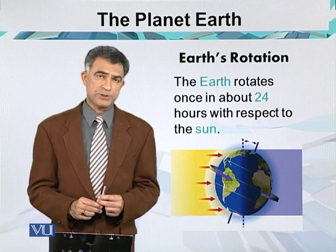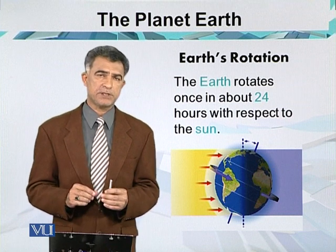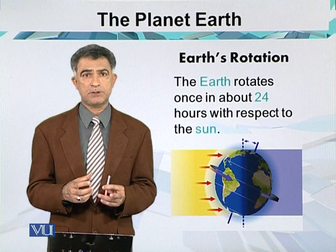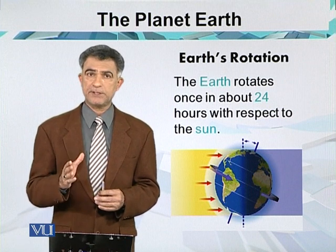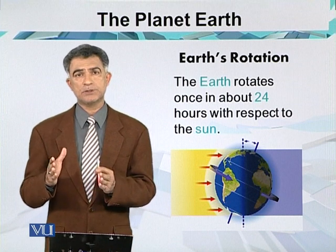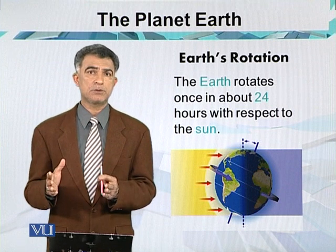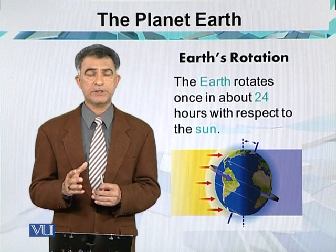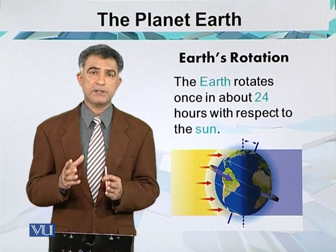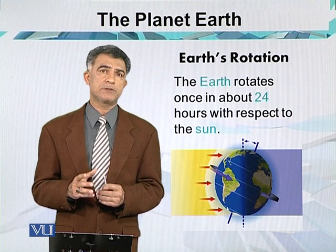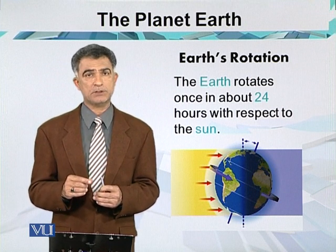Due to this rotation, half of the portion of the planet is in front of the Sun and receives rays from the star. So there are two phases: day and night. The line which separates the two phenomena of day and night is called the circle of illumination.